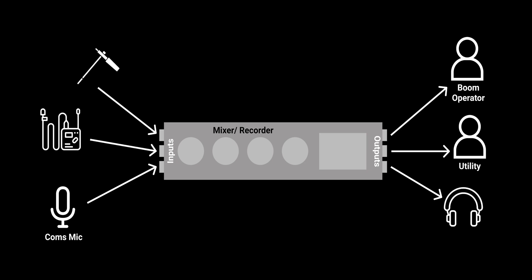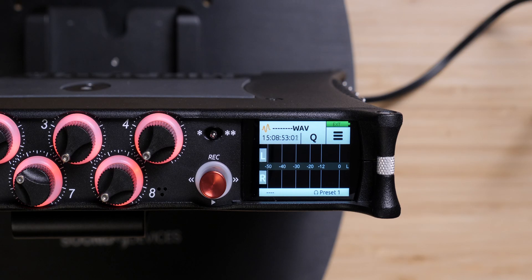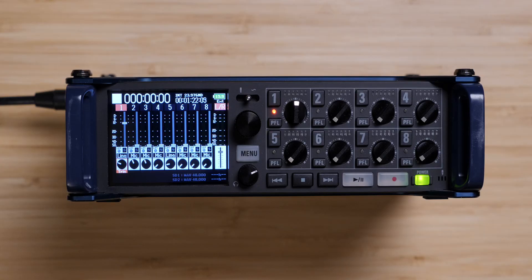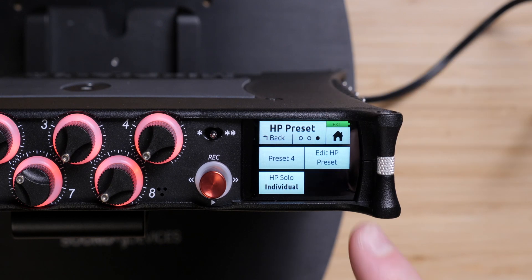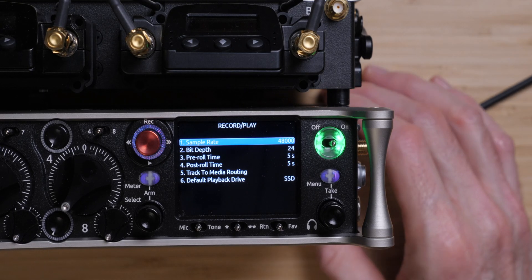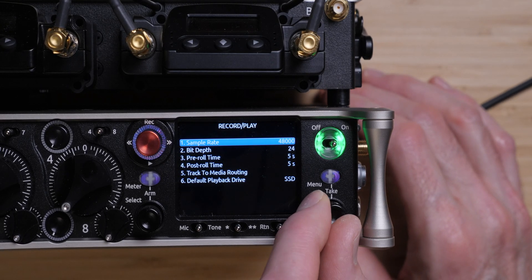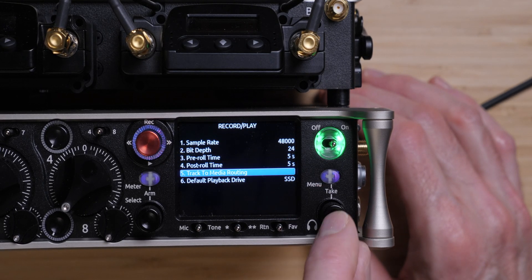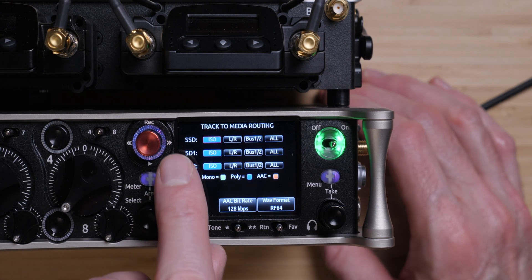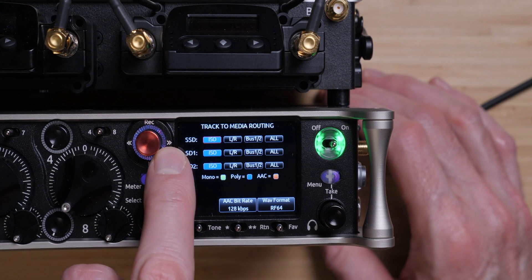Routing also applies if you're using some prosumer recorder mixers which allow you to create custom headphone mixes, like the Zoom F series and Sound Devices Mix Pre series of recorders. On higher-end recorders or mixers, you can often also define what gets recorded to each memory card or drive. That is called media routing.